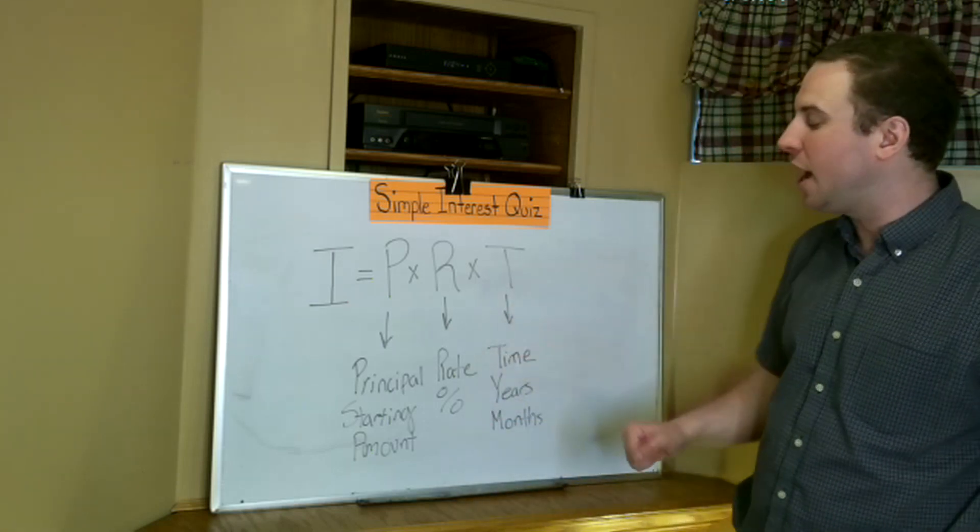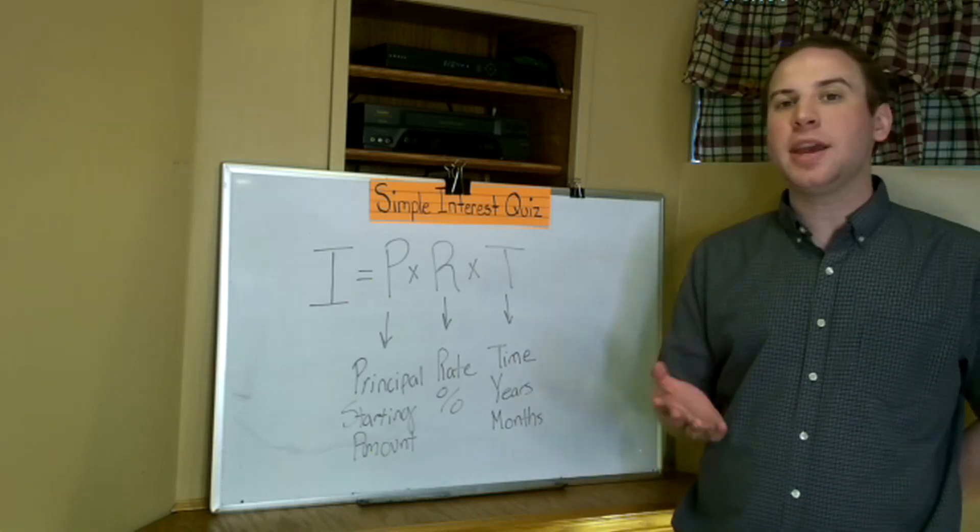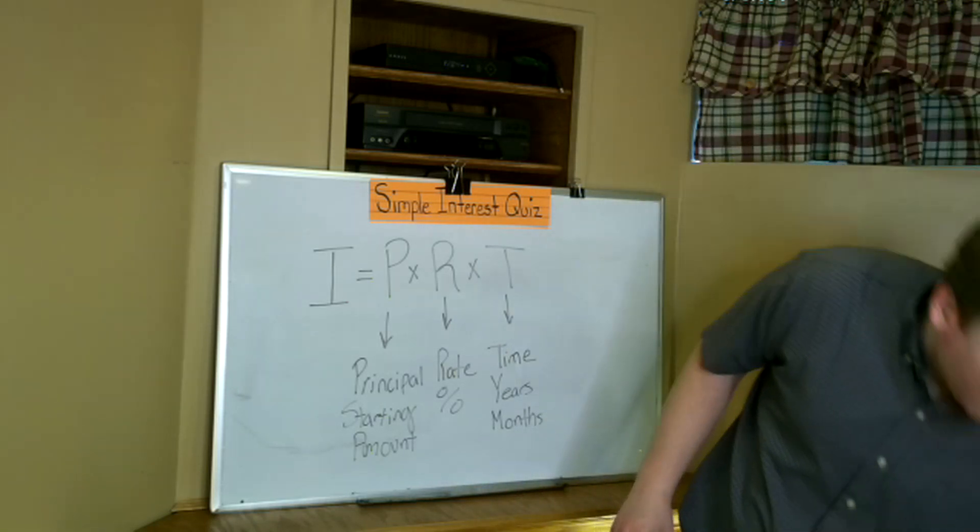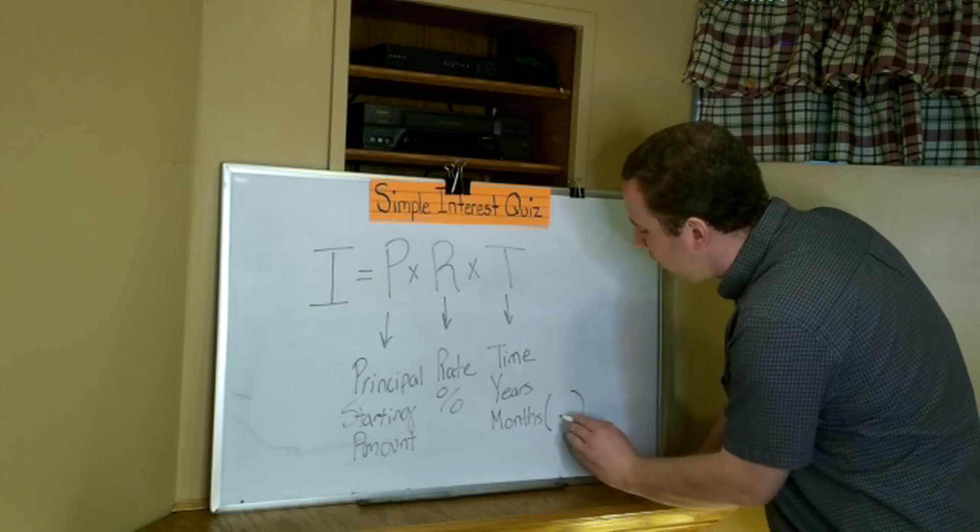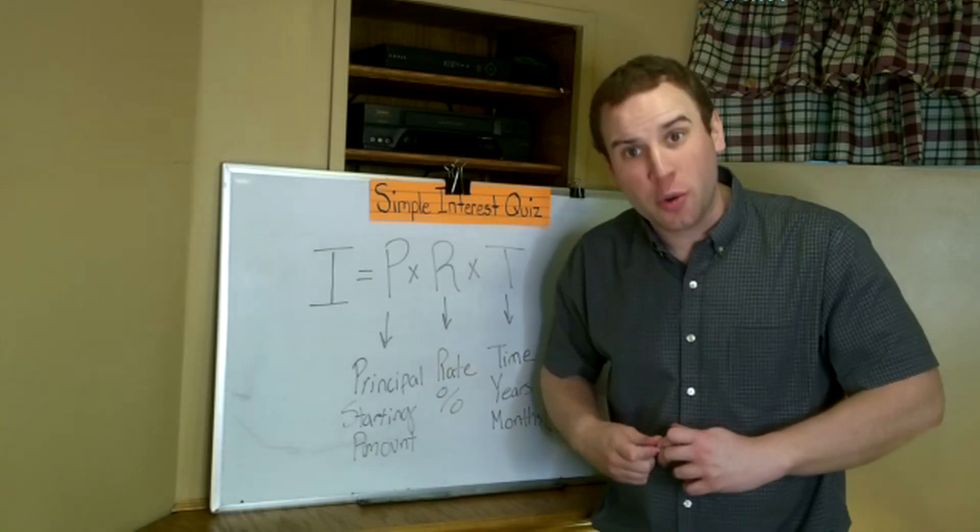And T deals with time and for some of your questions they may deal with years or they may deal with months. The way that we convert months into years is we just created a fraction with 12 in our denominator and the number of months in our numerator.